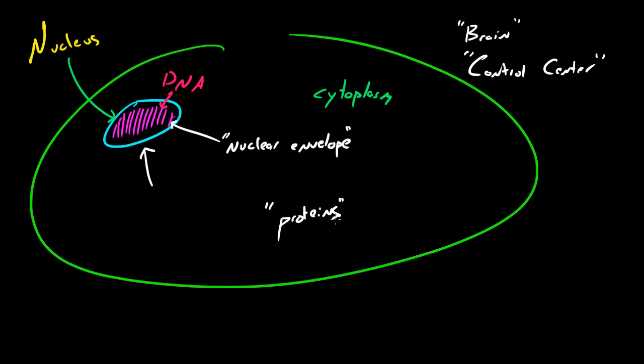Proteins do a lot of different things throughout your body. What the cell does—this cell right here—depends on the action of the proteins that it creates. So that's why people say that the nucleus is indeed the brain or control center of the cell, because it's very important.